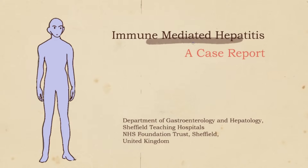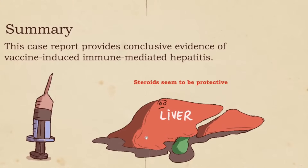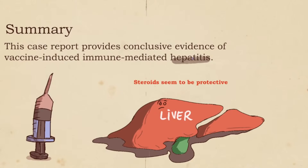He once again developed liver damage, but fortunately recovered. The authors claim this report provides conclusive evidence that vaccine-induced immune-mediated hepatitis is possible. After the first dose there was hepatitis, the patient recovered, then he got the second dose and the hepatitis developed again — confirming it was related to the vaccine.